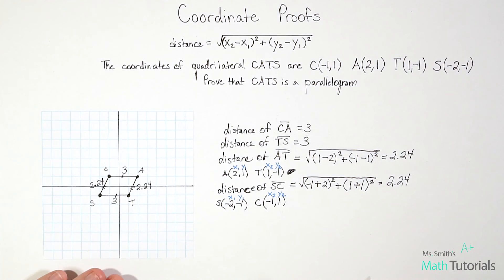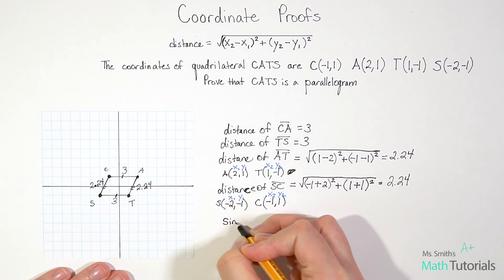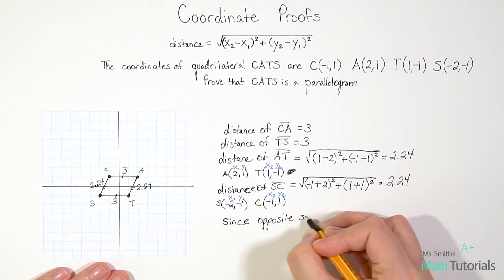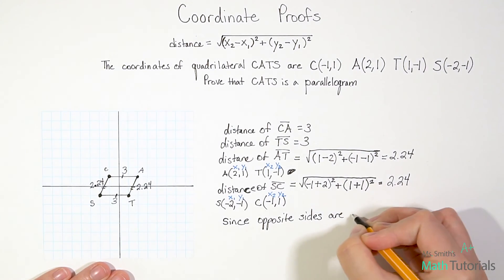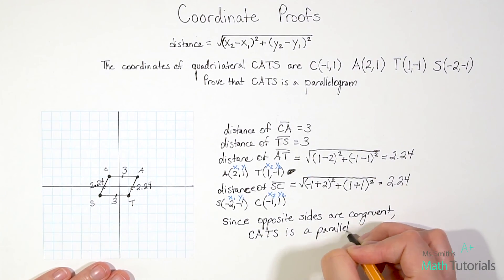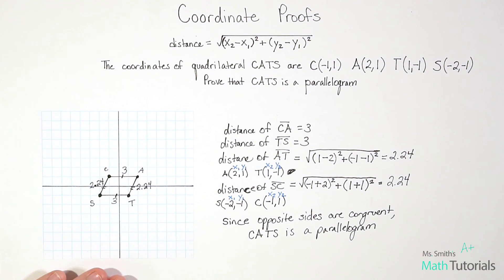And we want to do that in a statement. So I'm going to show you how I like to write my statement. Since opposite sides are congruent, we can say with certainty that CATS is a parallelogram. And as long as you've got that statement, that final statement, that's always good to show your teacher or instructor or professor that you know what you've proved. Since opposite sides are congruent, CATS is a parallelogram.